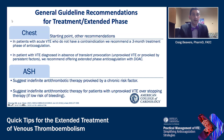In patients with acute VTE who do not have contraindications, we recommend a three-month treatment phase of anticoagulation. In patients with VTE diagnosed in the absence of a transient provocation — an unprovoked VTE or provoked by persistent factors — guidelines recommend offering extended phase beyond that three-month period with a direct-acting oral anticoagulant. ASH suggests indefinite antithrombotic therapy for VTE provoked by a chronic risk factor, and also suggests indefinite therapy for unprovoked VTE over stopping therapy if there is a low risk of bleeding.